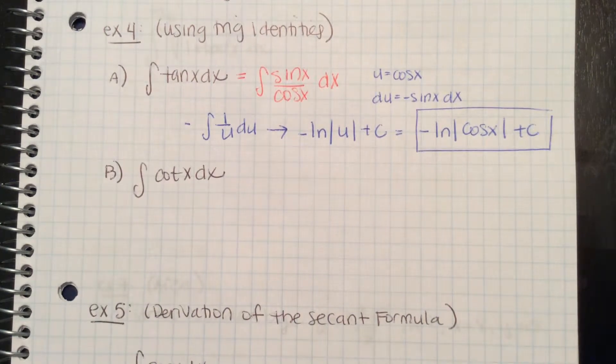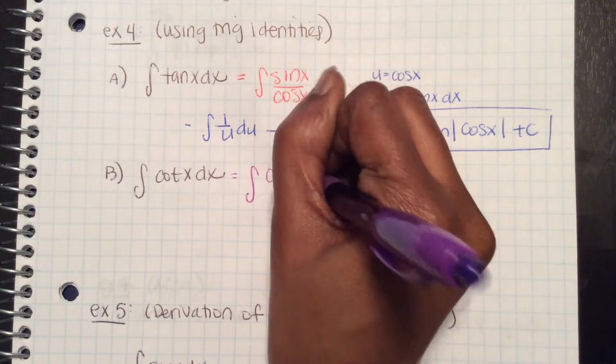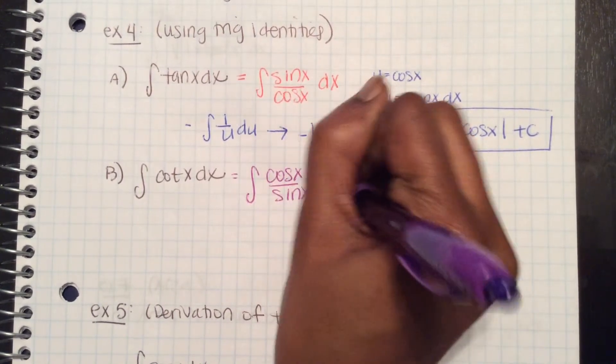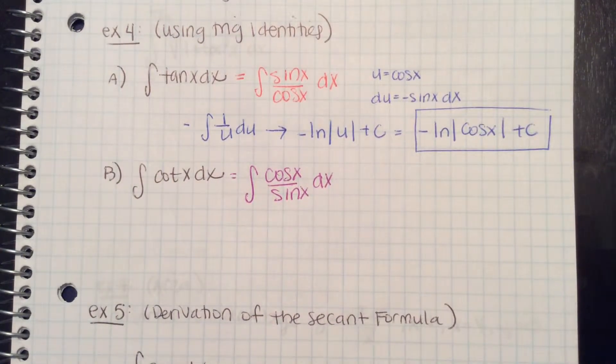In part b, cotangent x is going to be very similar. This is the integral of cosine x over sine x by definition. So in this problem, let u equal sine x.